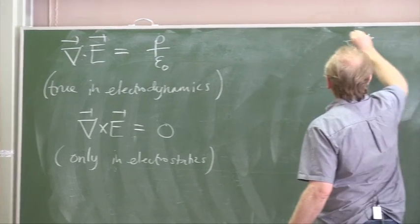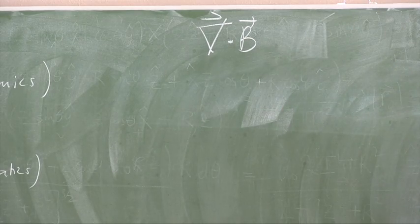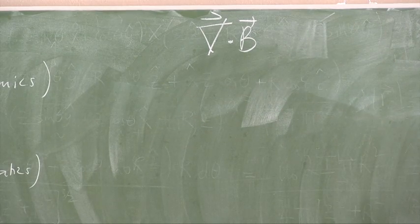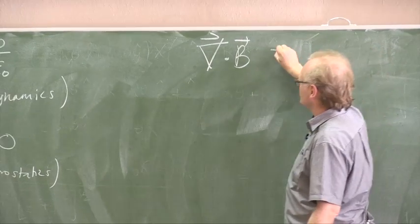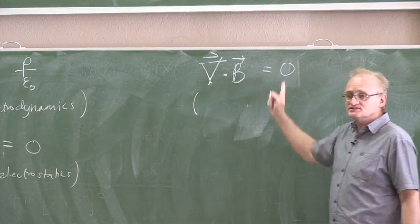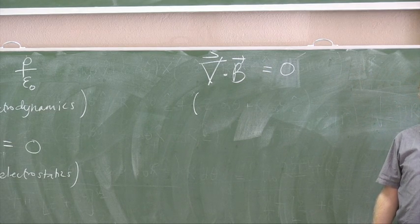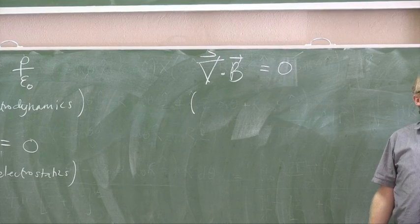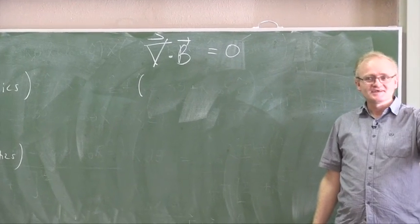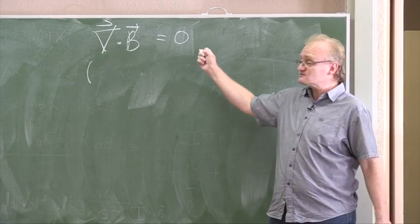Then, if you calculate the divergence of the B field, you take Biot-Savart and you just work out, what's the divergence of B? This is zero. Is that true in electrostatics or not? Yes, it is. So, the divergence of B is true in full electrodynamics. This is one of Maxwell's equations.